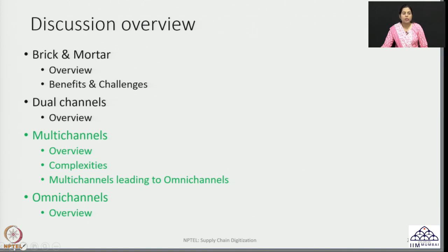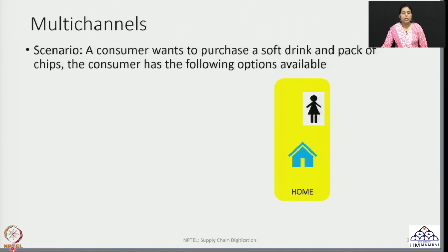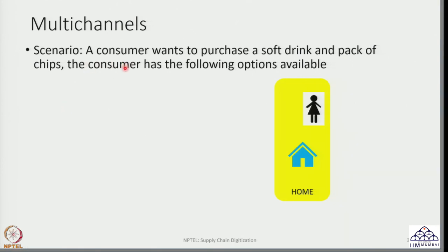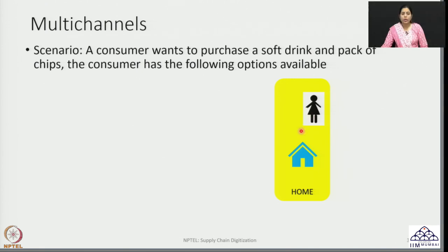We have already discussed brick and mortar systems and dual channels, and how a dual channel strategy considers the benefits of both a brick and mortar system and an online system to deliver final value to consumers. We can extend this to multiple channels. Consider a scenario: a consumer at home wants to purchase a soft drink and a pack of chips. What are the options available to this consumer?